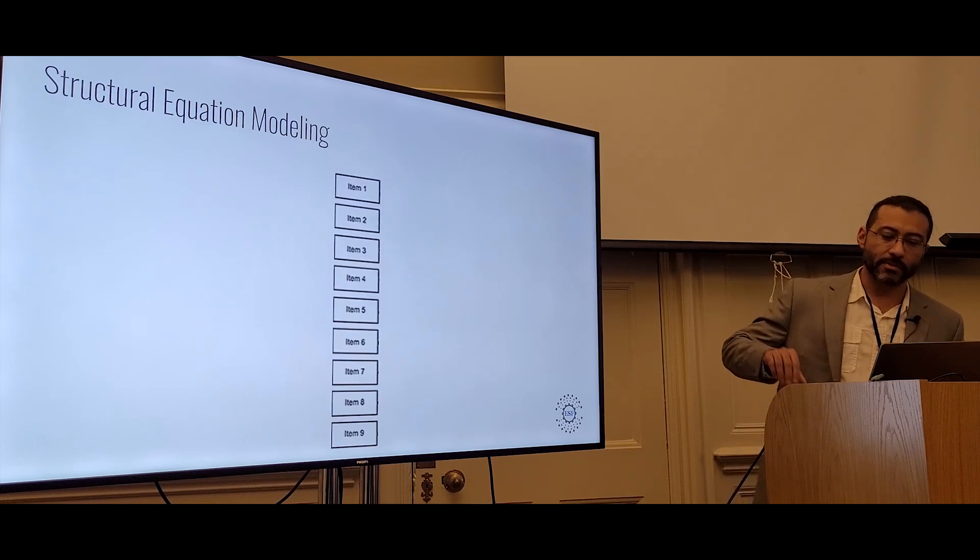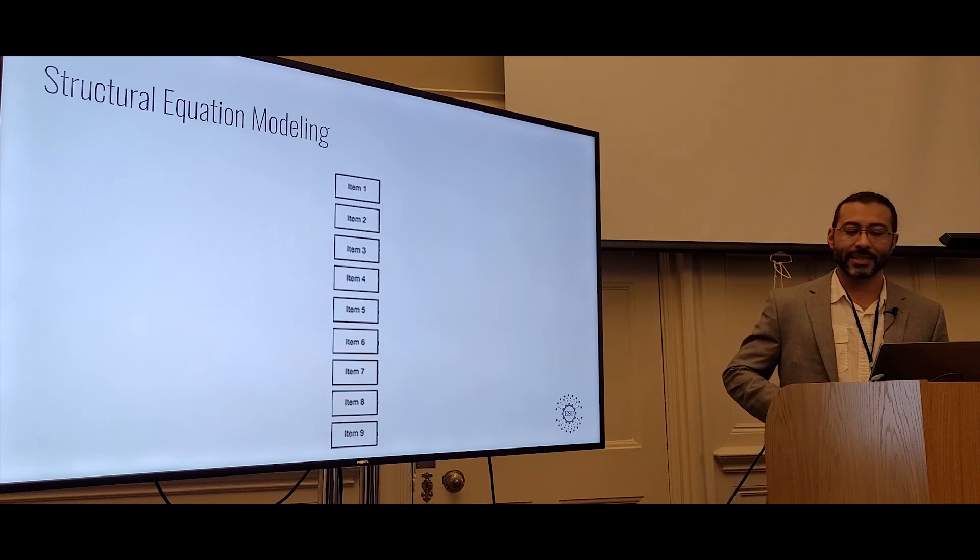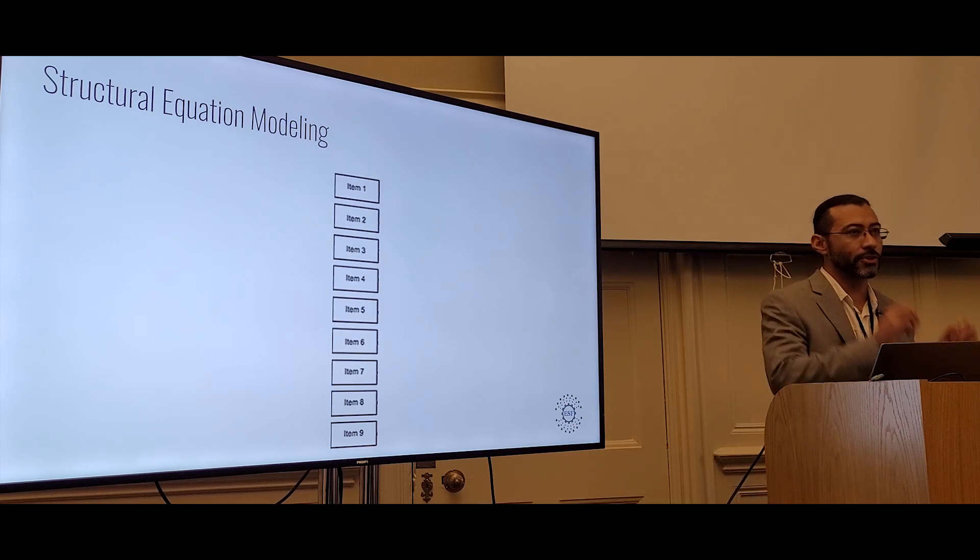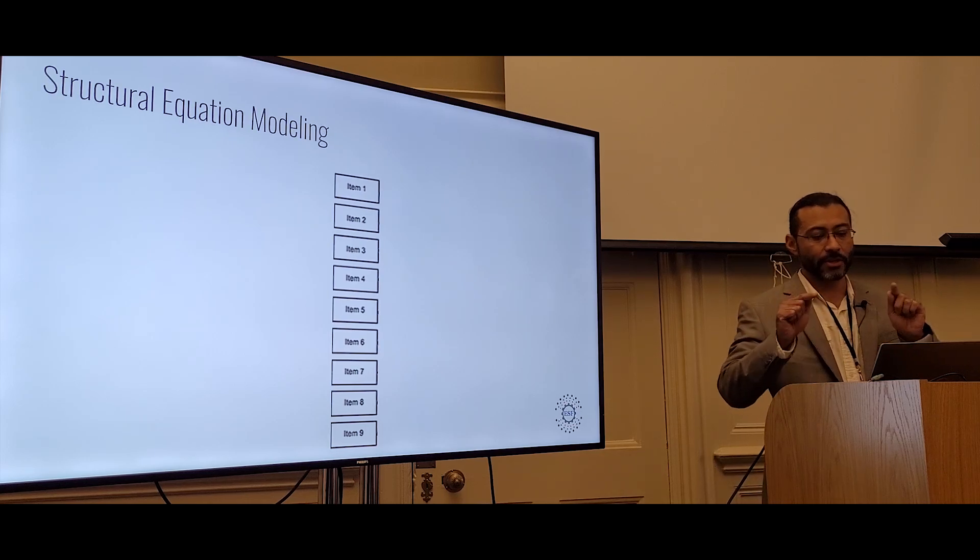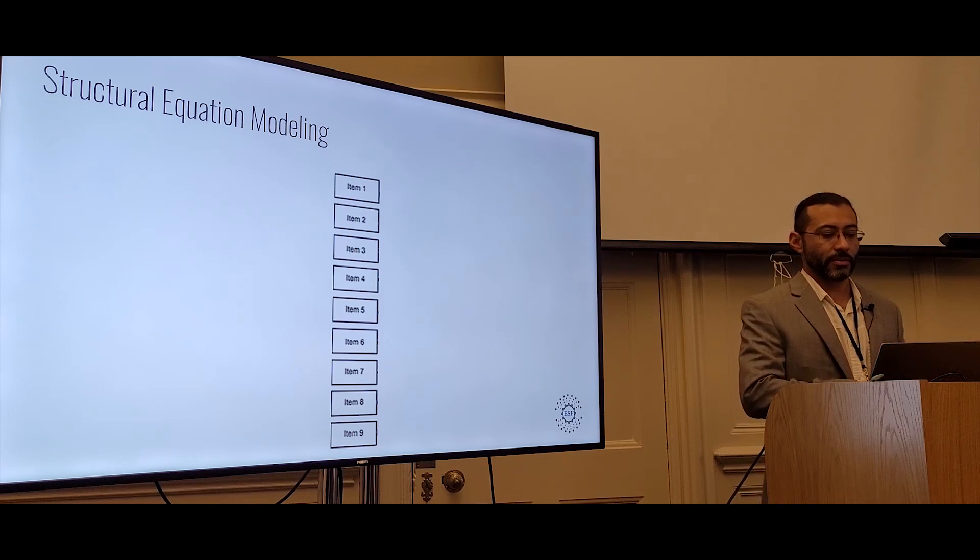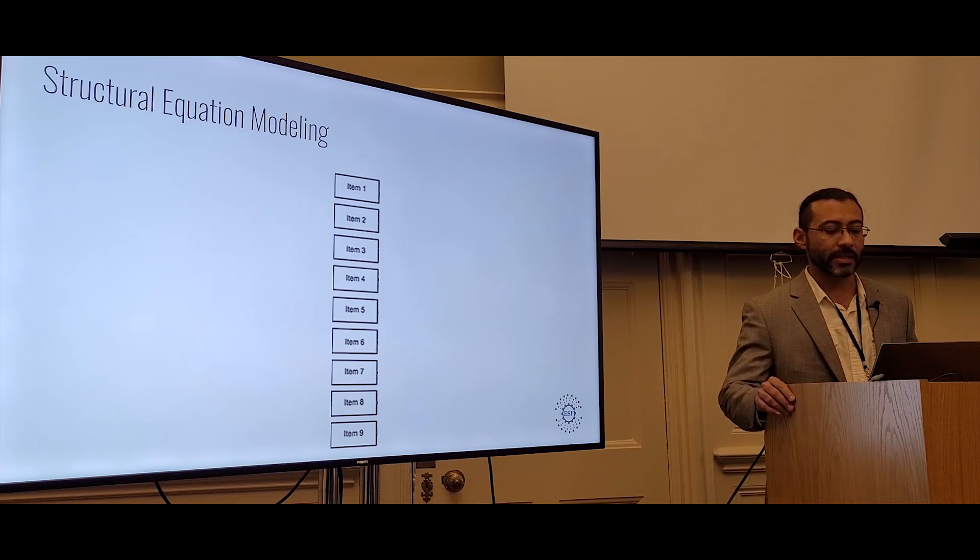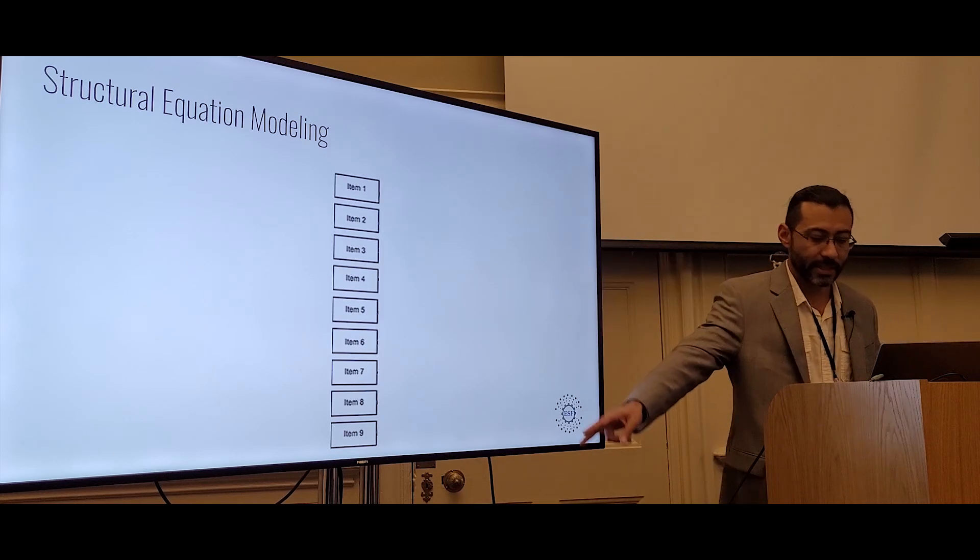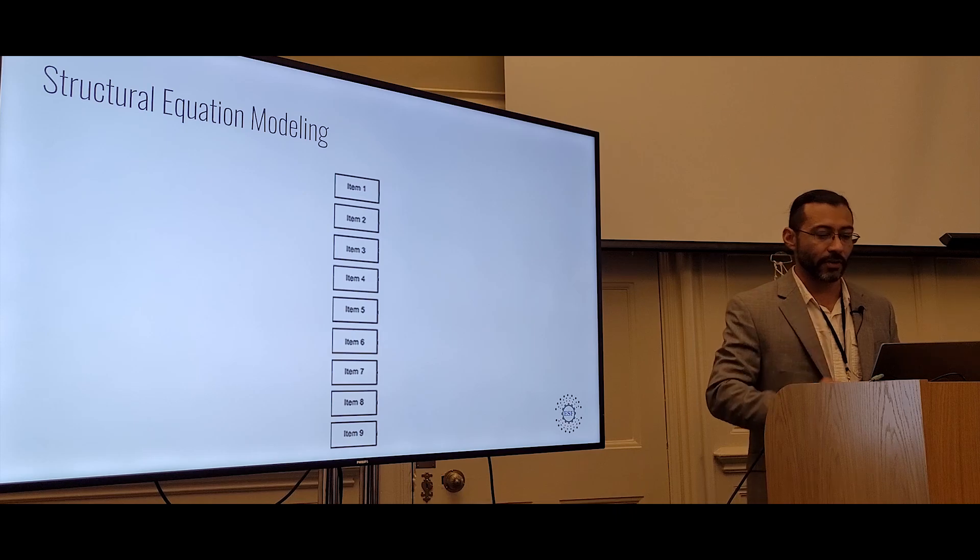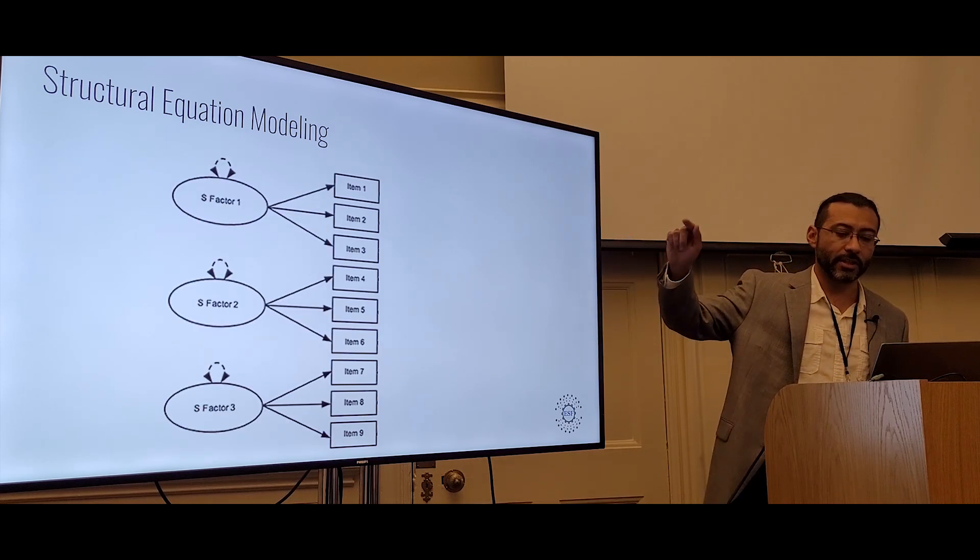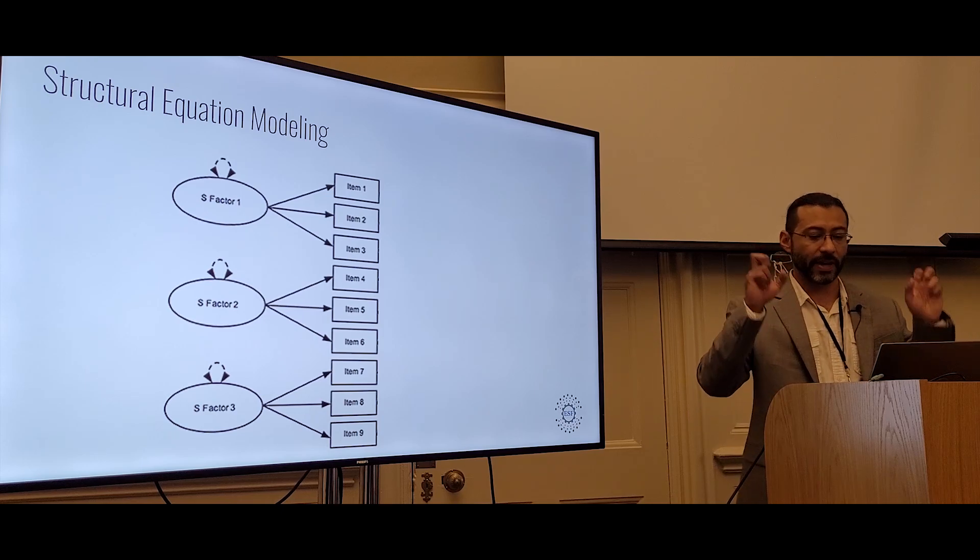So, structural equation modeling is a sophisticated technique that's used to test hypotheses about things that we can't measure directly, but can measure indirectly. Things like depression or economic development, certain diseases and genetics. In structural equation modeling, a phenomenon is measured by multiple items or indicators. In our case, these are our survey questions. Each item measures a particular phenomenon, or what is known as a specific factor.